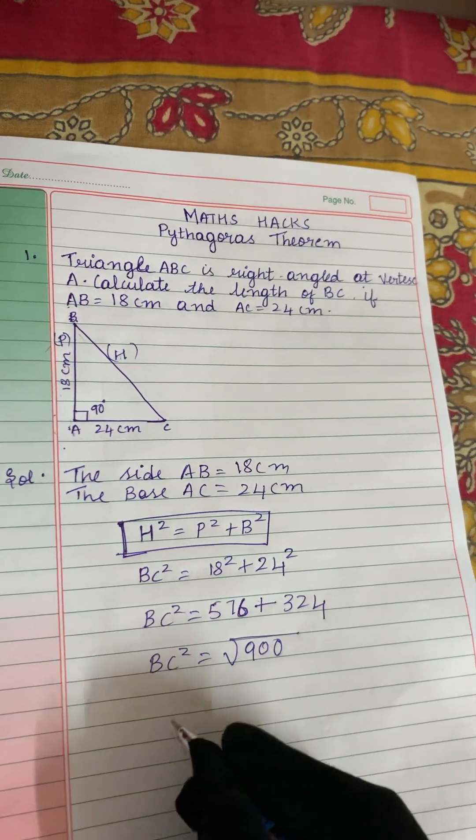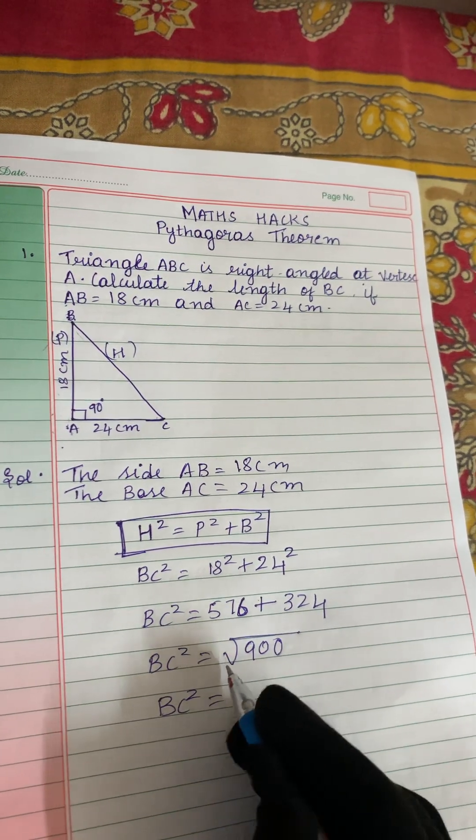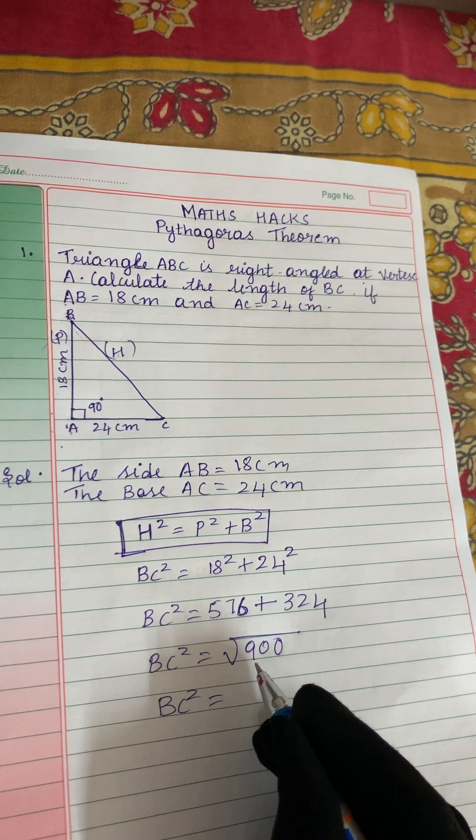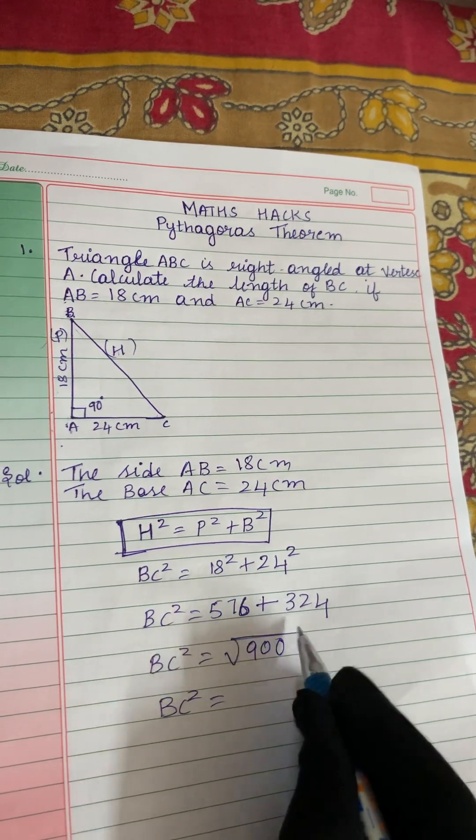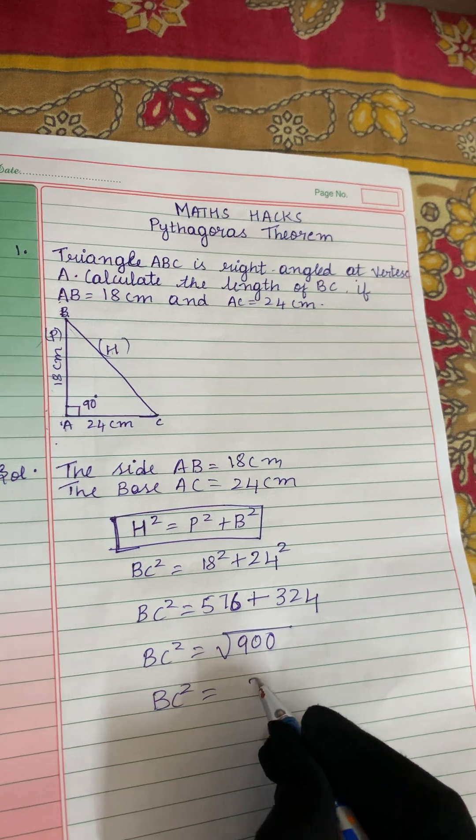900 square root. Now BC² equals root 900. Now what is the root of 900? 30. How 30?